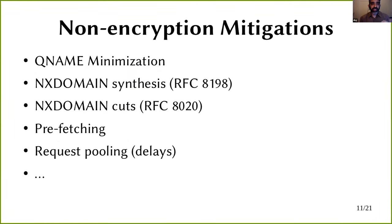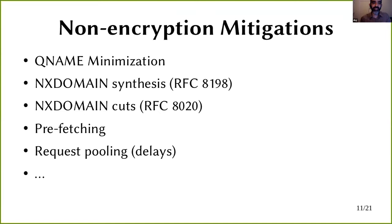There are mitigations like QNAME minimization, NX domain cuts, and aggressive caching, but they are not yet in wide deployment and still have operational difficulties. Just this morning I helped fix a misconfiguration in one of joker.com's authoritative name servers that would have cut off all responses if QNAME minimization, NX domain synthesis, and NX domain cuts had all been implemented together. We want these things deployed, but they are risky to deploy right now and don't have a short-run path to deployment.